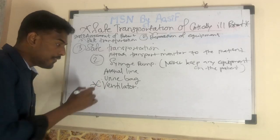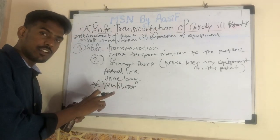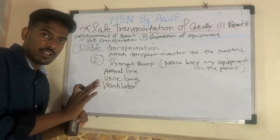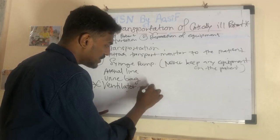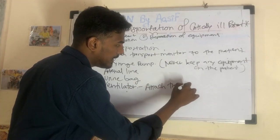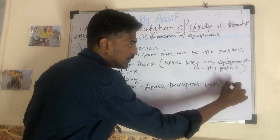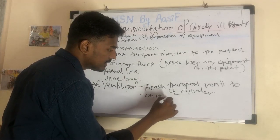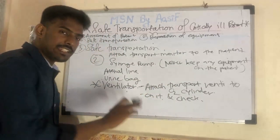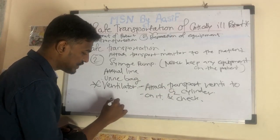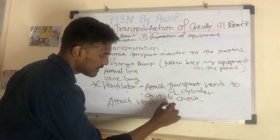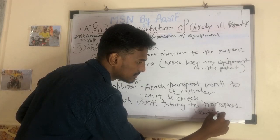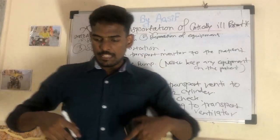Next is the ventilator - very important. We address the ventilator at the end because this is very important and while doing all the other things we do not want to disturb the airway. Once we finish all other things, we come to the airway. First attach the transport ventilator to the O2 cylinder, turn it on, and check that it is functioning properly. Once confirmed, attach the ventilator tubing to the transport ventilator.